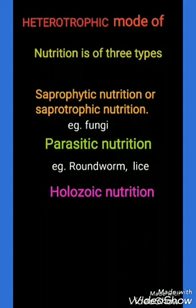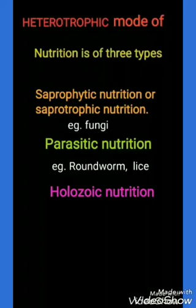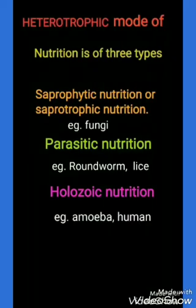In parasitic nutrition, the organism derives its food from the body of its host without killing it — for example, roundworm and plasmodium. In holozoic mode of nutrition, an organism takes food into its body by the process of ingestion, and the ingested food is then digested and absorbed.